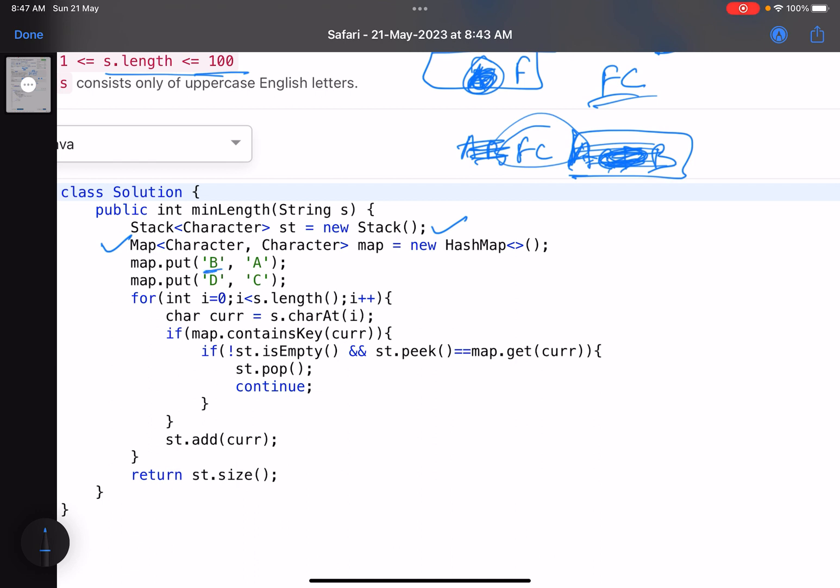Just take a map that if I get a B I have to search for A as the topmost character. If I get a D I have to check for C as the topmost character.